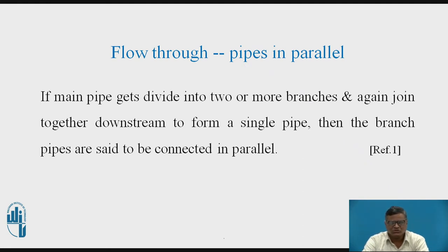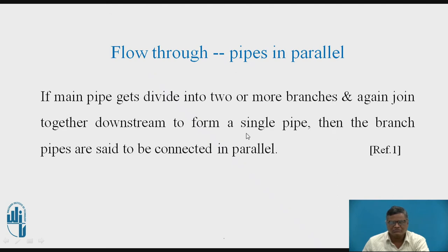Flow through pipes in parallel: if a main pipe gets divided into two or more branches and again joined together downstream to form a single pipe, then the branch pipes are said to be connected in parallel. So the pipe starts as one, then branches, then the branches meet each other, and we have again a single pipe.